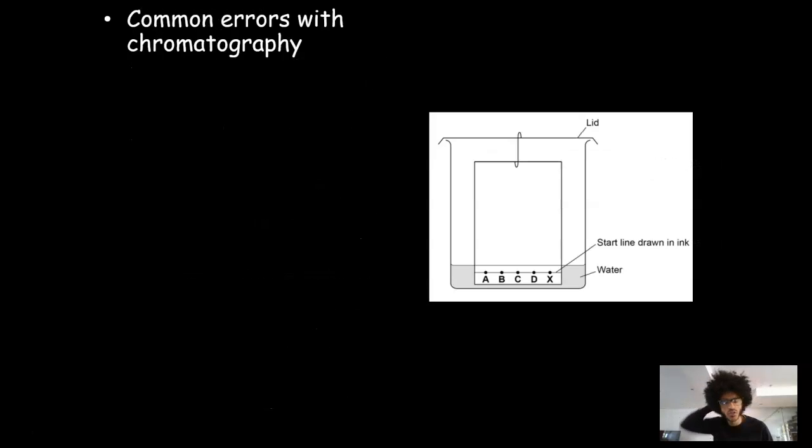The second thing is common errors of chromatography. So sometimes what they'll ask you, because the method's so straightforward, they'll have to find ways of testing your understanding. And one of the ways they test your understanding is showing you a flawed method or a bad method and saying, what is wrong with this? And it'll either be in writing or in a diagram. Now, as you can see here, I've got a diagram of someone who is a very confused student and doesn't really know how to set the whole thing up. And from here, you can see there are a number of errors that the student has done.